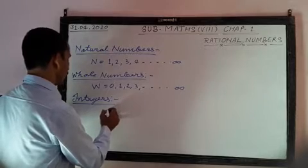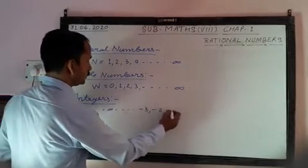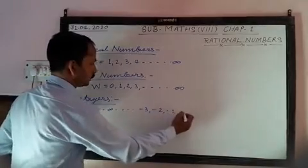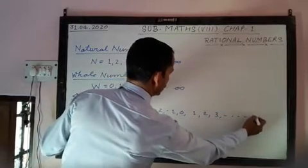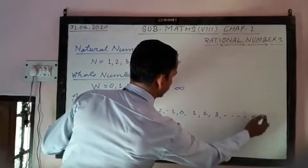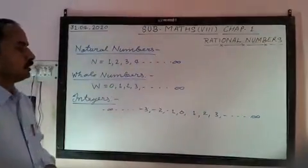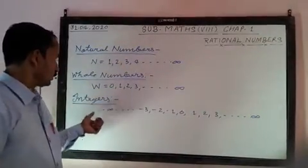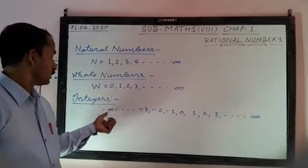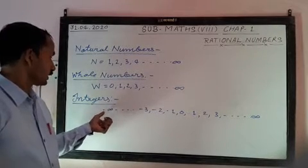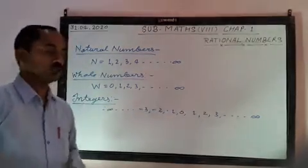Such as your minus infinity, minus 3, minus 2, minus 1, 0, 1, 2, 3, and the end of it. As you are seeing on the board, our integers from minus infinity to positive infinity.